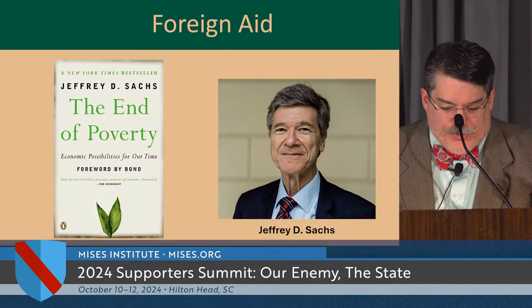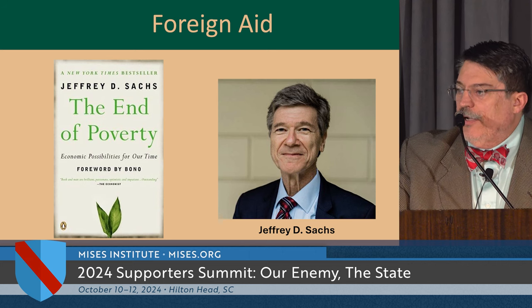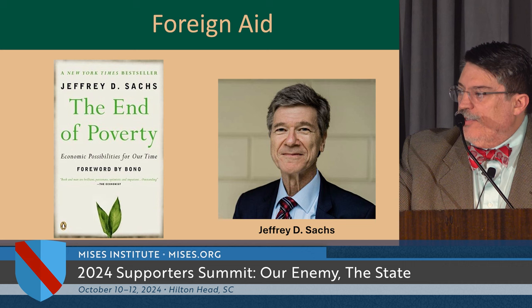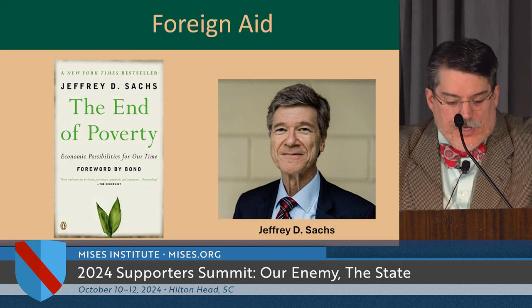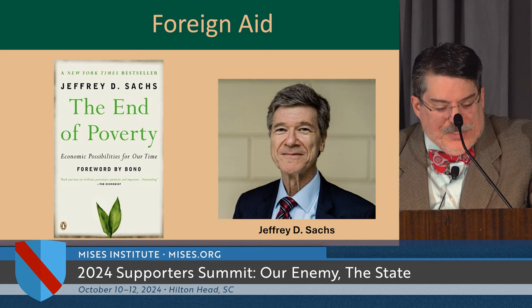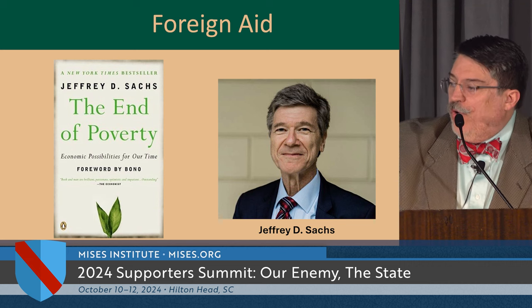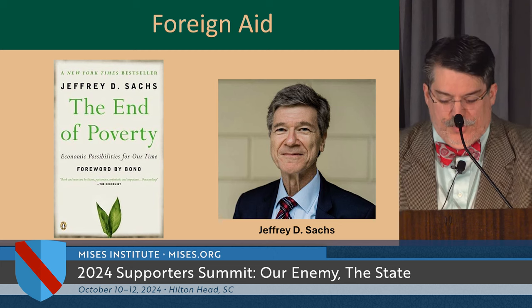Suppose we don't want to go to central planning. Another path to try to achieve economic progress is through foreign aid. Economist Jeffrey Sachs recently wrote The End of Poverty — with a foreword by Bono of U2, not to be confused with Sonny Bono — in which he argued that foreign aid was necessary because of the so-called poverty trap.